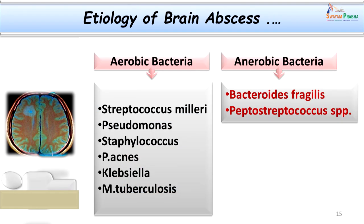Knowing the bacteria causing brain abscess helps initiate specific therapy. Aerobic bacteria involved include Streptococcus milleri, Pseudomonas, Staphylococci, Propionibacterium acnes, Klebsiella species, and Mycobacterium tuberculosis in chronic cases. The important anaerobic bacteria include the Bacteroides fragilis group, which was isolated in our index case. A combination of aerobic and anaerobic bacteria can be isolated in a single case, which is the usual picture.